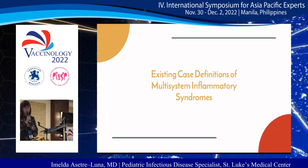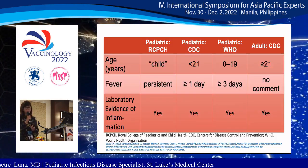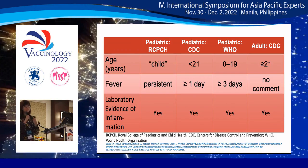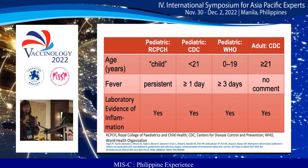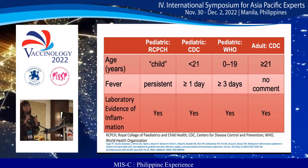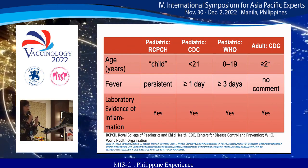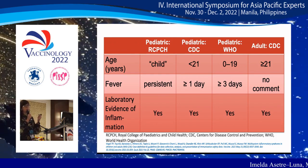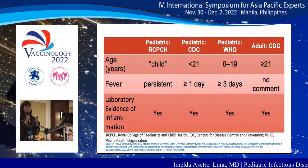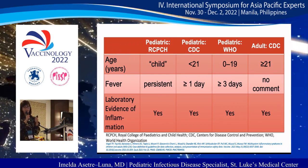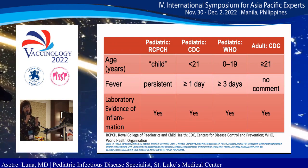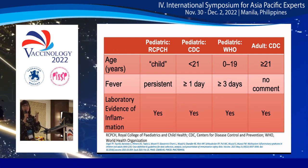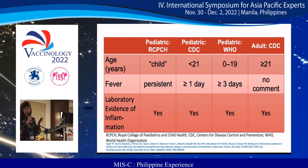These are the existing case definitions of multi-system inflammatory syndrome depending on the international organization — from the RCPCH of the UK, the US CDC, and the WHO. Initially it was primarily for children, but later the US CDC also included a case definition for adults, called MIS-A. For age and duration of fever, it varies depending on which organization you follow.